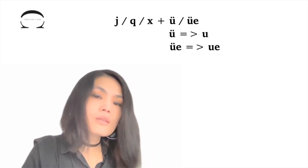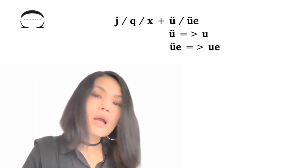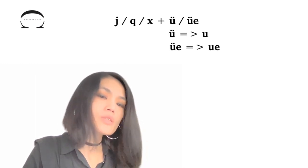However, when it comes to J, Q, X, since they cannot pair with the letter u in Chinese, the two dots are systematically omitted in Chinese pinyin.